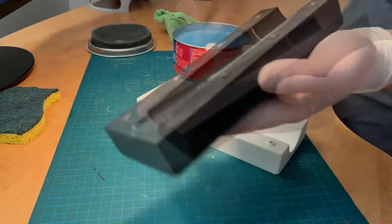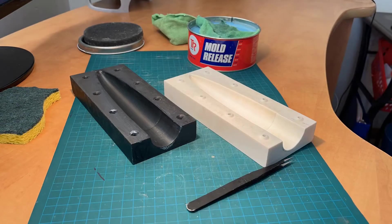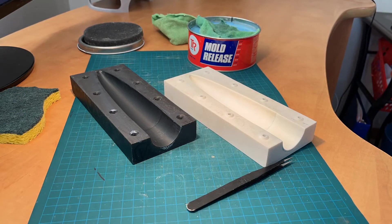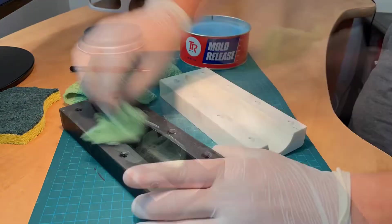For a first-time use of the molds, between six and ten coats should be applied. Subsequent layups, such as this one, should only require around three to five coats to return the surface to a shiny and smooth finish.